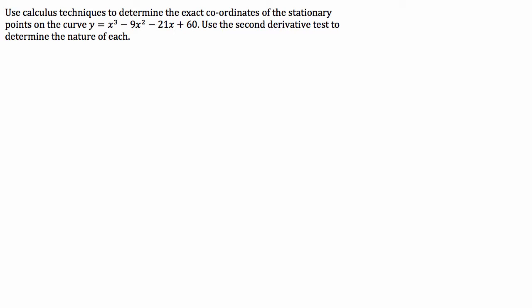Hi guys. The powers that be have asked me to work through another curve sketching question, paying specific attention to finding the coordinates and the nature of turning points or stationary points. The question is asking us to use calculus techniques to determine the exact coordinates of the stationary points on the curve y equals x cubed minus 9x squared minus 21x plus 60.